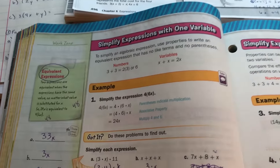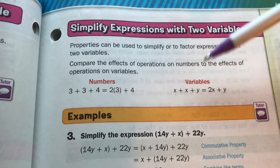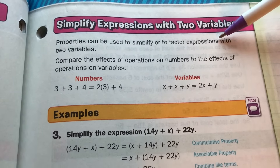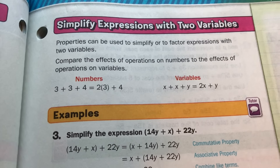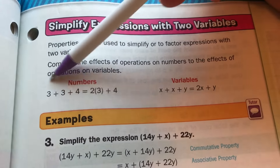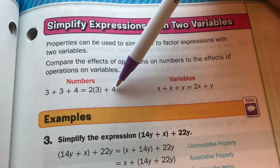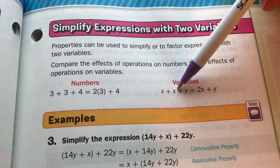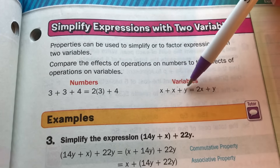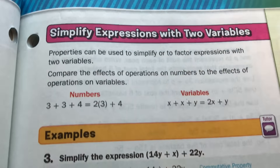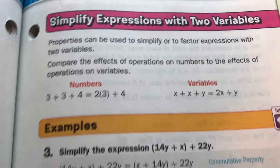That was simplifying expressions with one variable — we always just had x. Now we're going to do the same thing but with two variables, like x and y. Properties can be used to simplify or factor expressions with two variables. Compare: with numbers, 3 + 3 + 4 = 2 × 3 + 4. Similarly, x + x + y is just like 3 + 3 + 4, giving 2x + y.